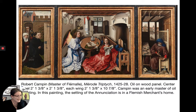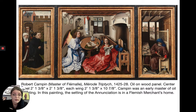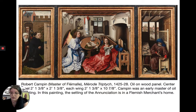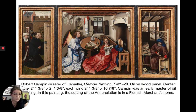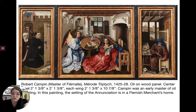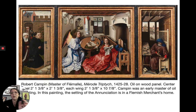The patrons depicted in the left panel are Peter Engelbrecht and Margaret Scrymaker. In the left panel's walled garden — a symbol of the Virgin Mary's purity and virginity — the patrons kneel witnessing the scene through a door. Engelbrecht literally means 'angel bringer,' so he likely chose the Annunciation subject because Gabriel is the angel bringer. Scrymaker means 'shrine maker' or 'cabinet maker,' which may be why Joseph the craftsman is included as a nod to her name and heritage.